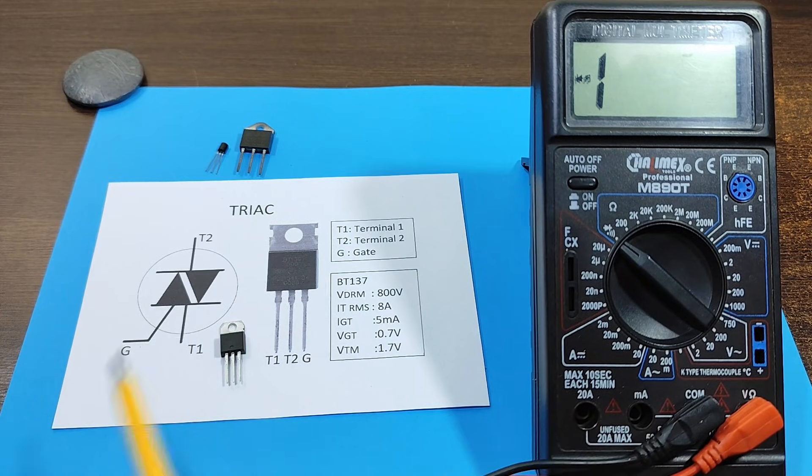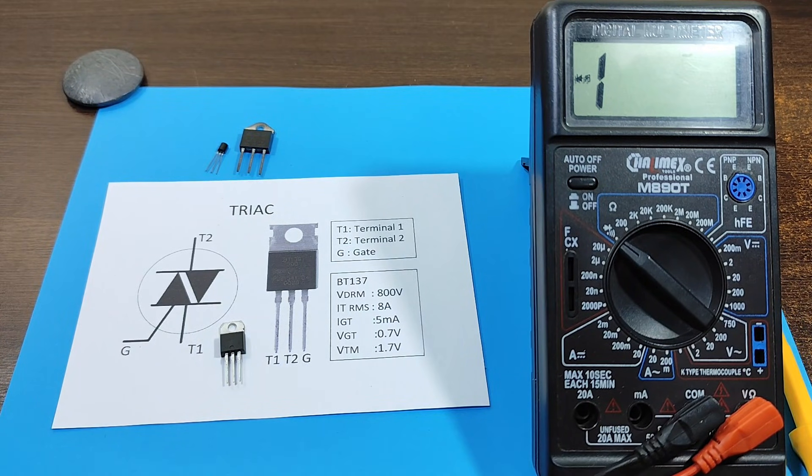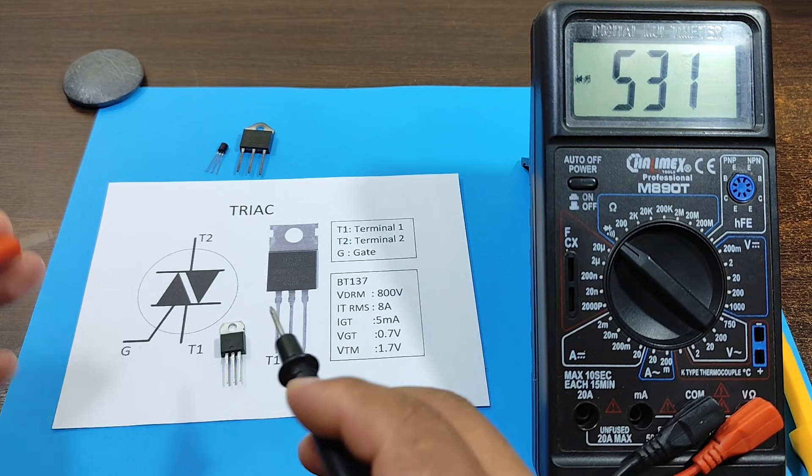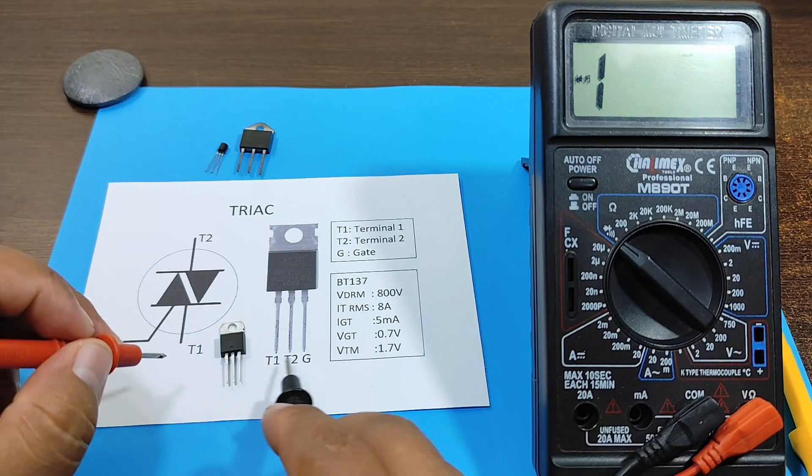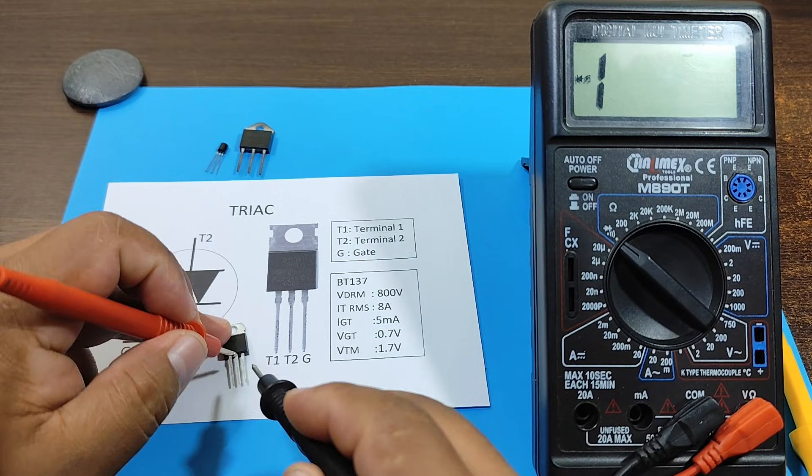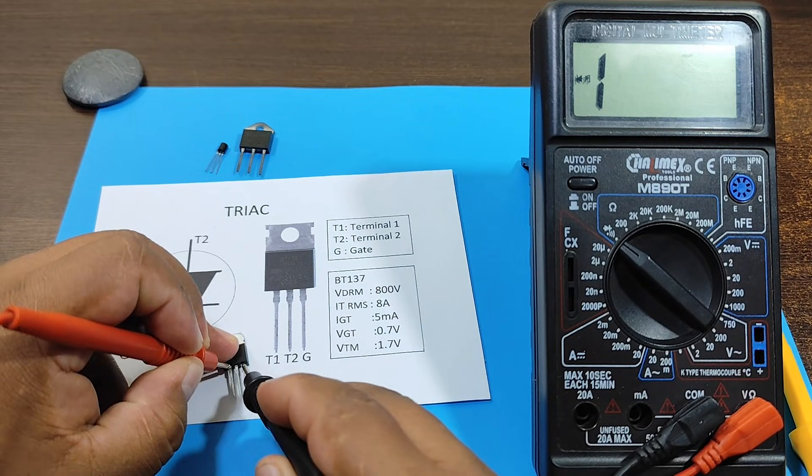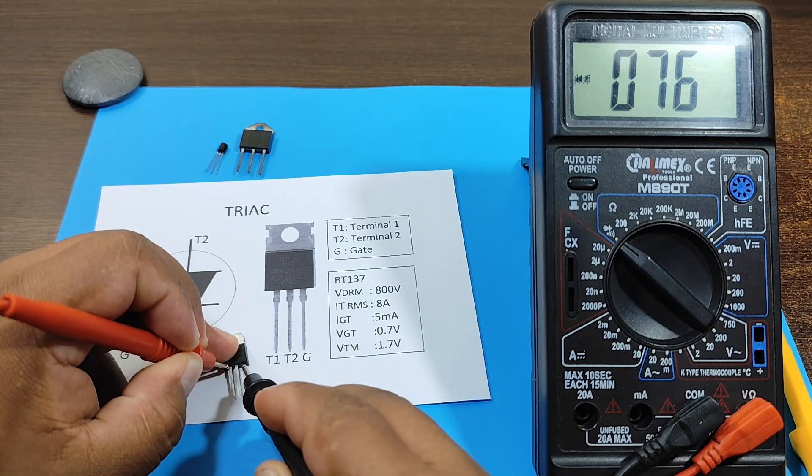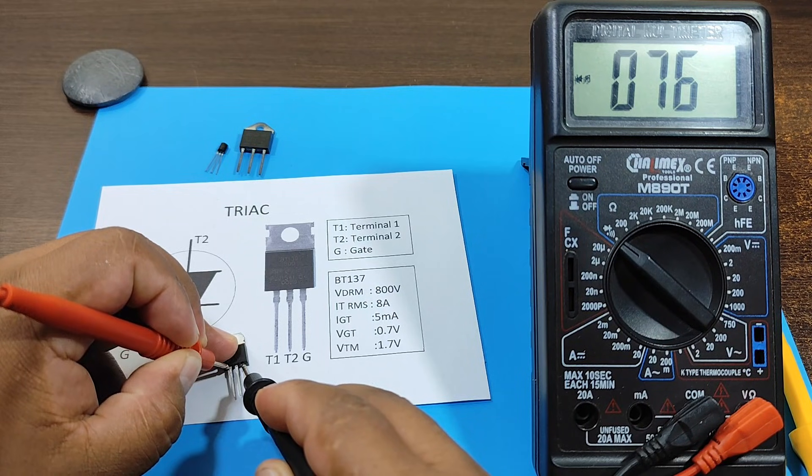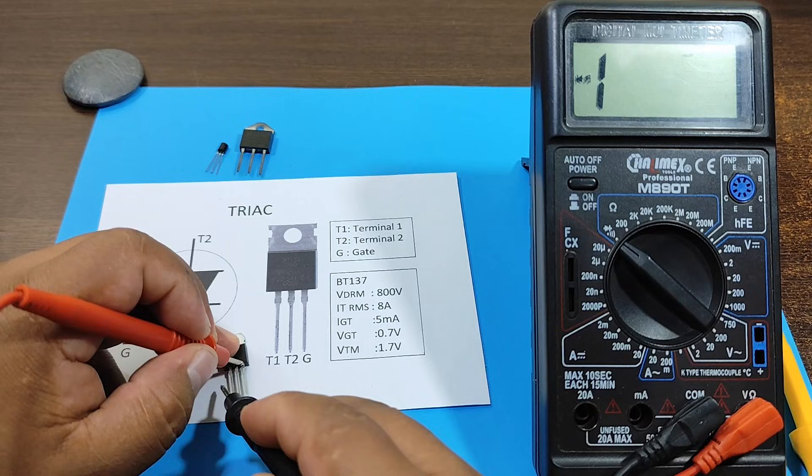For that we are going to use this triac. Between T1 and the gate, we should get a reading. And if I measure it the other way around, it should still measure a similar value.